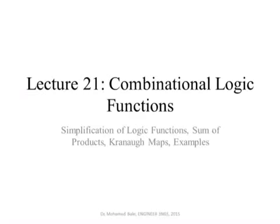In this part we are discussing combinational logic functions, and in these logic functions the value of the logic function depends only on the values of the logical variables at the input. It does not depend on any past history. There is no memory for these circuits, and that's why we call them combinational logic functions. Later I will show you some examples of sequential logic functions that require some sort of memory, but for these, the output depends on the current value of the input.